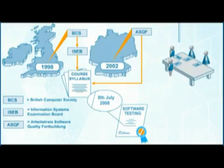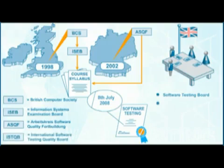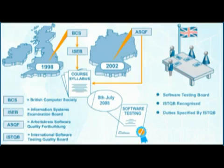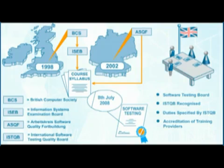Within each participating country, local aspects are controlled by a national ISTQB-recognized software testing board. Duties of national boards are specified by the ISTQB but are implemented within each country. The duties of the country boards are expected to include accreditation of training providers and the setting of exams.